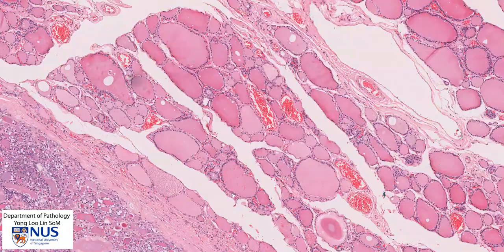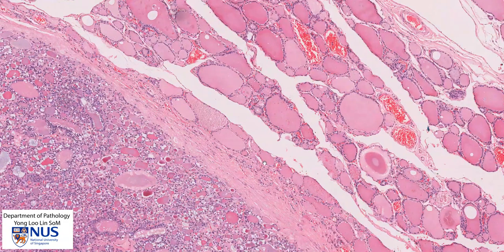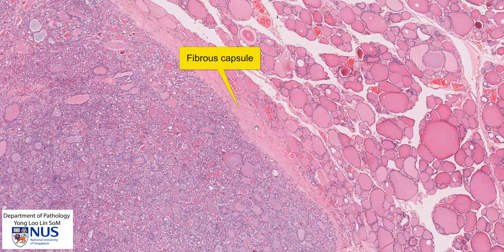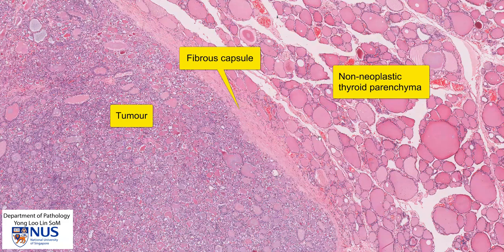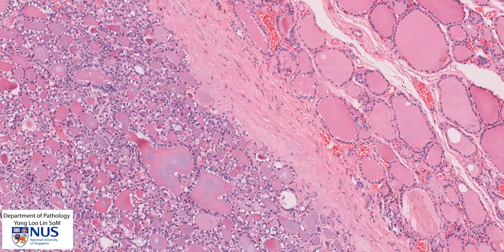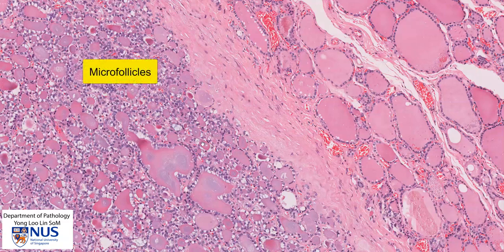Most of them are fairly large, and now we come to the area of pathology. Here is the fibrous capsule, here is the tumor nodule, and here is the non-neoplastic thyroid gland. We're going to compare the tumor versus the non-neoplastic thyroid gland, and straight away you can see that the architecture of the tumor does also comprise follicular structures, which I am encircling here with the cursor. But we notice that the follicular structures are very much smaller than the normal thyroid follicles. These are called microfollicles.